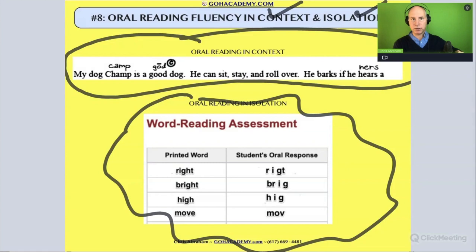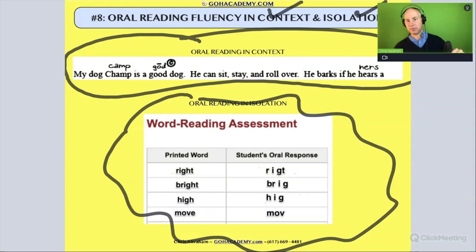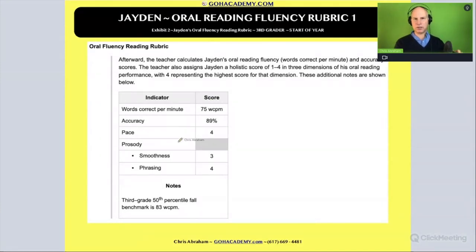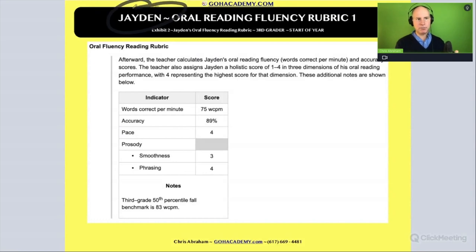Then we're going to look at different things like rubrics where we can analyze a student's oral reading. You'll see videos connected to something like this — a rubric of a student's oral reading. We'll look at how they did based off this rubric, this grade sheet. This is one student named Jayden.